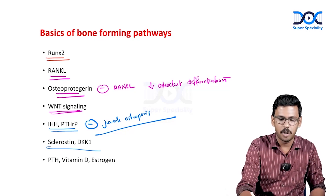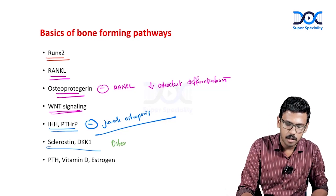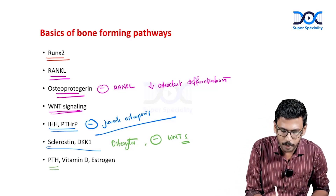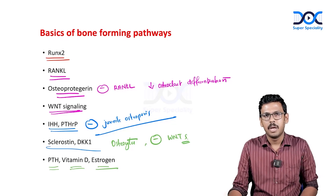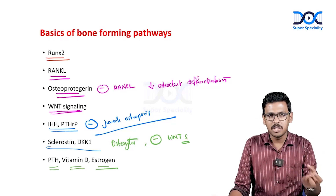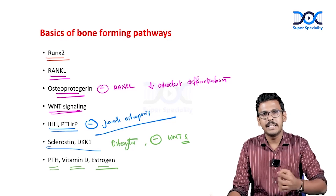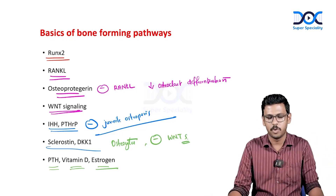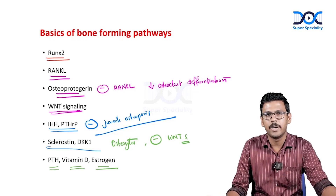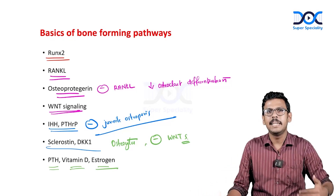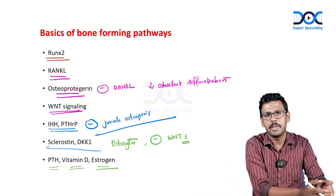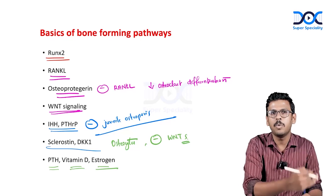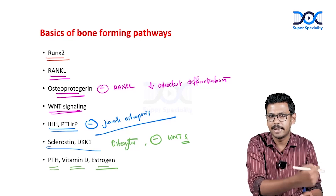Sclerostin and DKK1, produced by osteocytes, both inhibit WNT signaling. PTH and vitamin D bind directly to osteoblasts, and via osteoblasts increase RANK ligand production — influencing osteoclasts indirectly, not by direct binding. Estrogen can bind to both osteoblast and osteoclast, increasing anabolism and reducing resorption. PTH and vitamin D in excess are pro-resorptive, whereas estrogen in excess is pro-anabolic.